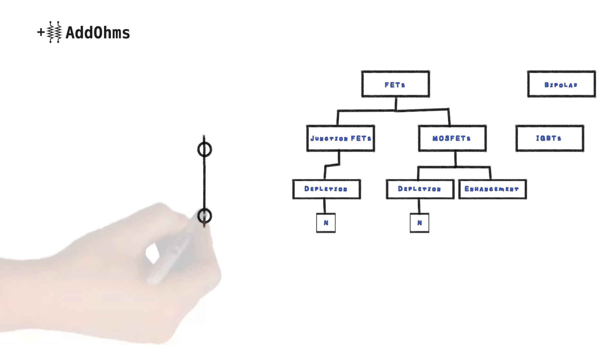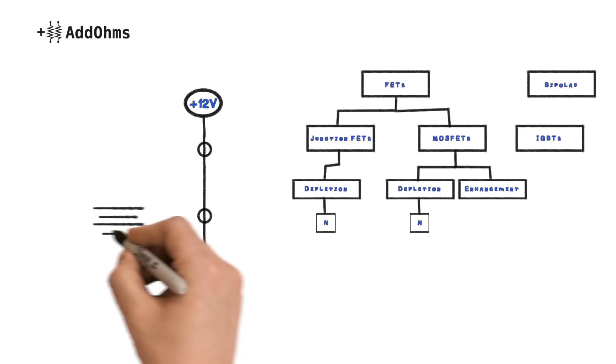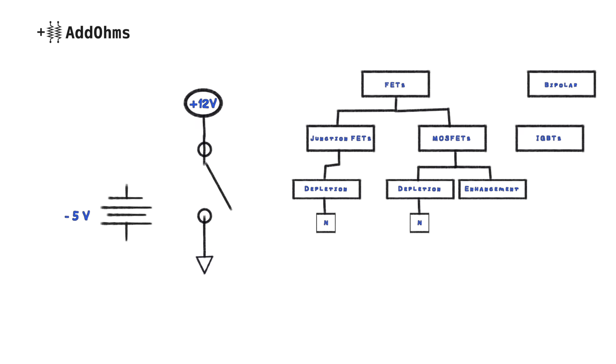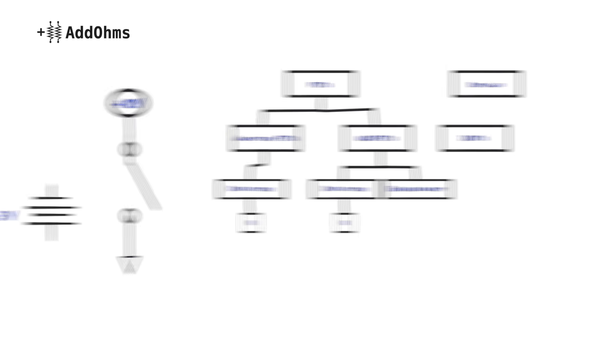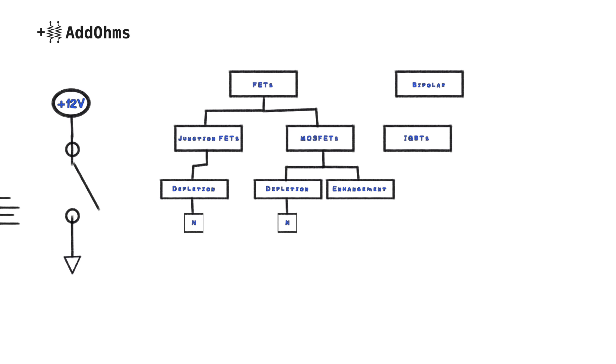A depletion mode MOSFET works like a normally closed switch. Current can flow when no voltage is applied. Applying a negative voltage actually causes the current flow to stop. An enhancement mode FET works like a variable resistor. They come in N-channel and P-channel types. Enhancement mode FETs are by far the most common transistor used today, so let's focus on them.